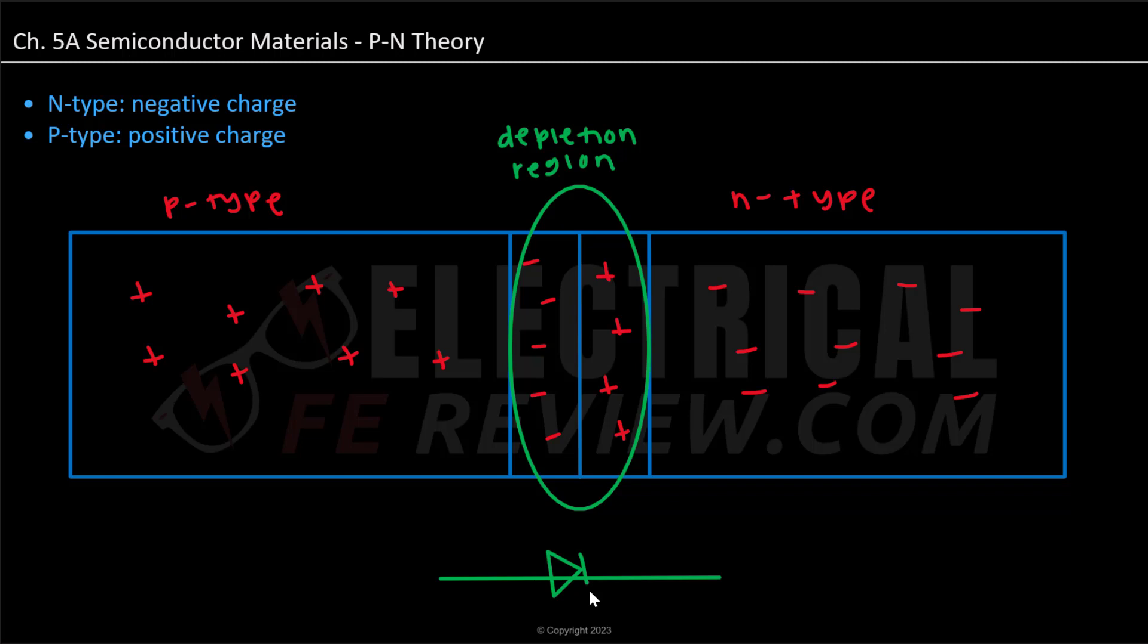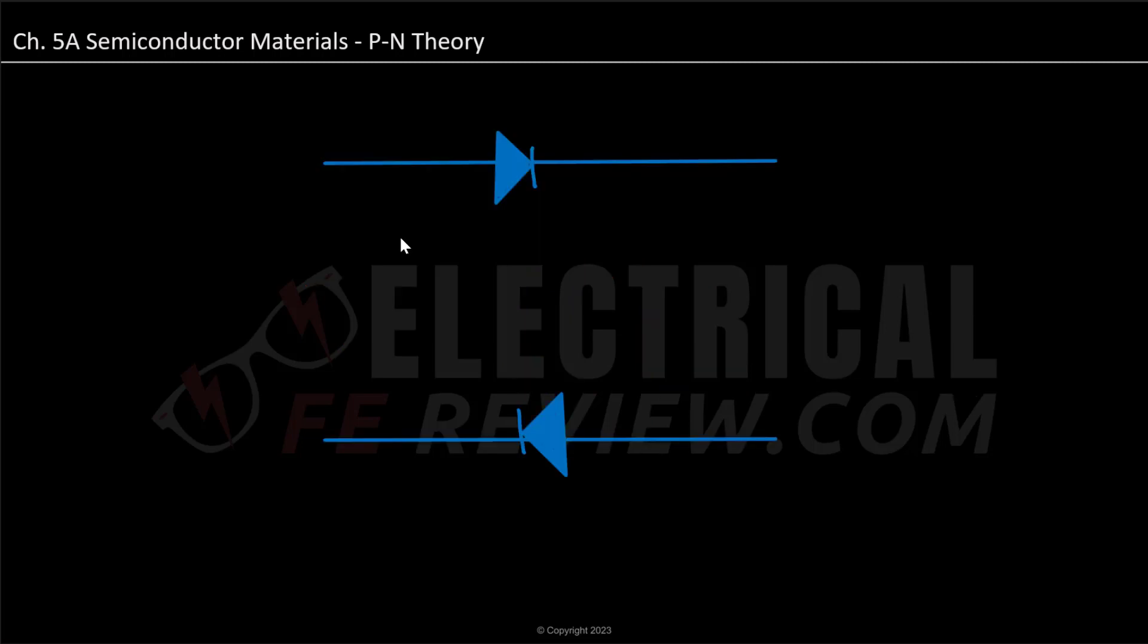Let's go ahead and clear the board to further explain. So when we have diodes, we can have two scenarios. Our top one shows that it is forward bias, and our bottom example shows that it is in reverse bias.